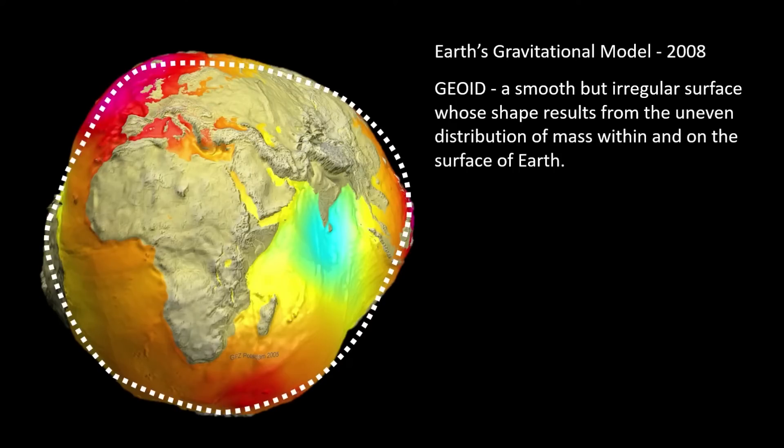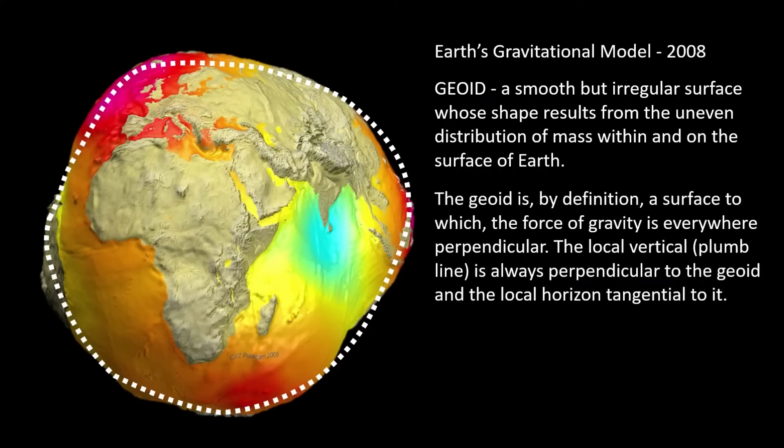The geoid is a smooth but irregular surface whose shape results from the uneven distribution of mass within and on the surface of Earth. The geoid is by definition a surface to which the force of gravity is everywhere perpendicular. The local vertical of the plumb line is always perpendicular to the geoid and the local horizon tangential to it.